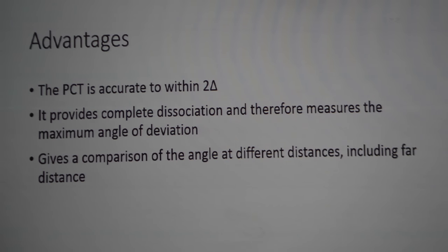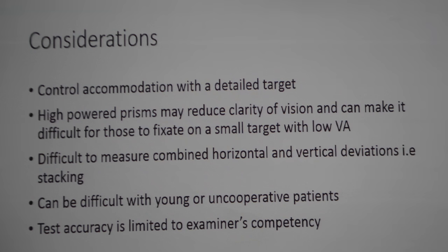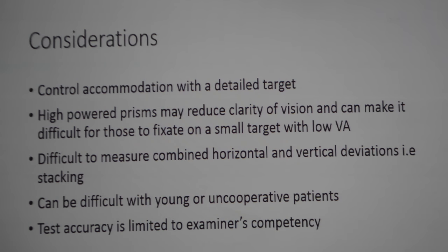The advantages of the PCT are that it is accurate to within two diopters, it provides complete dissociation, and it gives a comparison of the angle at different distances. Considerations include controlling accommodation with a detailed target, that high-powered prisms may reduce clarity of vision, that it is difficult to measure combined horizontal and vertical deviations, it can be difficult with young or uncooperative patients, and test accuracy is limited to the examiner's competency.